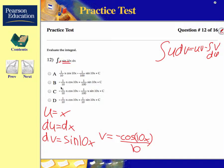We have u times v, which is x times negative cosine 10x over 10, minus the integral of v times du. So you have to integrate negative cosine 10x over 10.